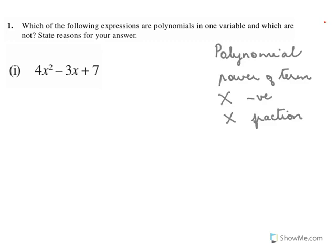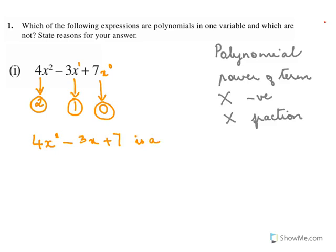In 4x² - 3x + 7, the first term has power 2, the second term x is x raised to 1 so power is 1, and the third term is x raised to 0 so power is 0. None of the powers are negative nor are they fractions — 2, 1, and 0 are all non-negative, non-fraction. So 4x² - 3x + 7 is a polynomial, and it has just one variable x, so it is a polynomial in one variable.